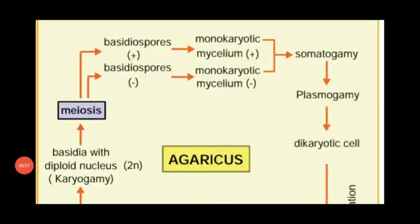Another important 3-mark question: draw a flowchart of the life cycle of Agaricus — it is also a book-back question. The primary mycelium contains one nucleus — monokaryotic mycelium — with two different strains, plus strain and minus strain. These two strains of nuclei are fused together by a process called somatogamy, followed by the fusion of the protoplasm of the two strains, named plasmogamy.